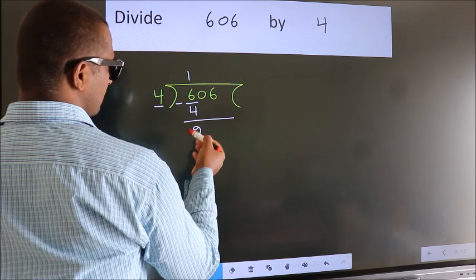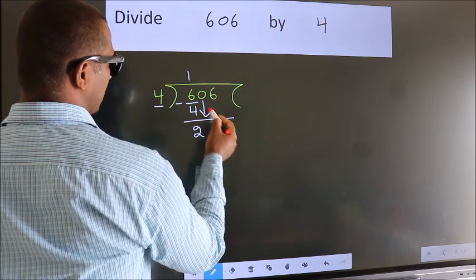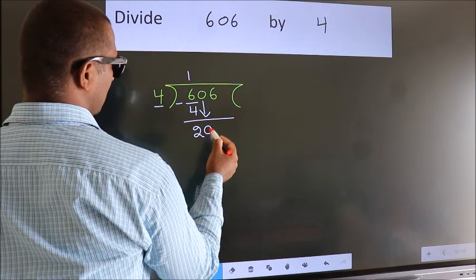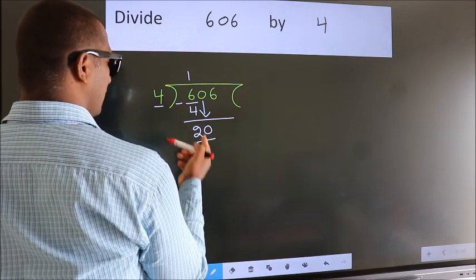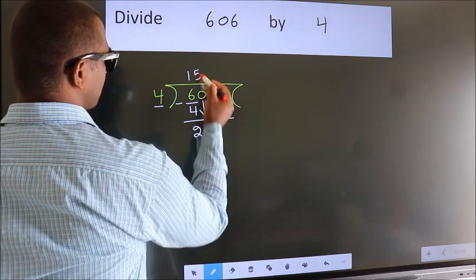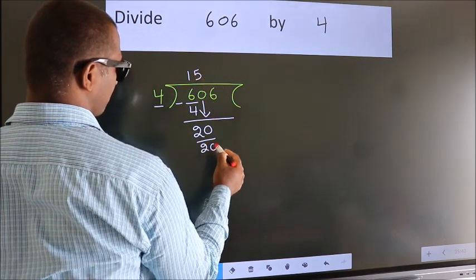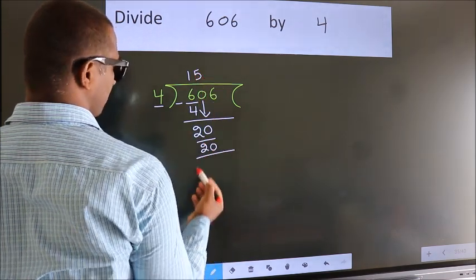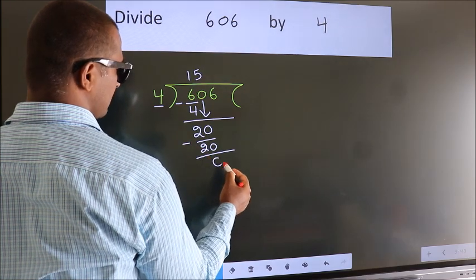After this, bring down the beside number. So 0 down, making 20. When do we get 20 in the 4 table? 4 fives 20. Now we subtract. We get 0.